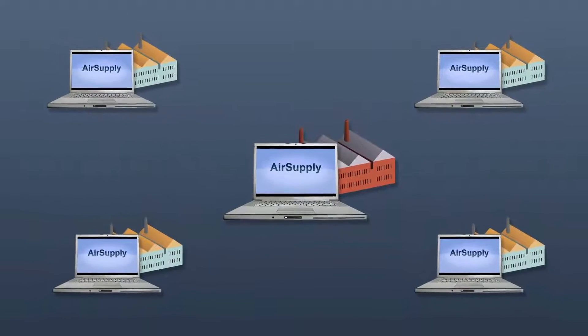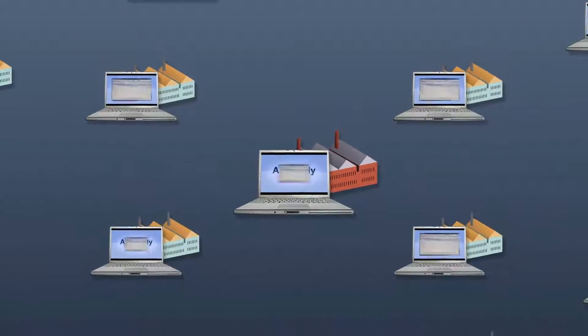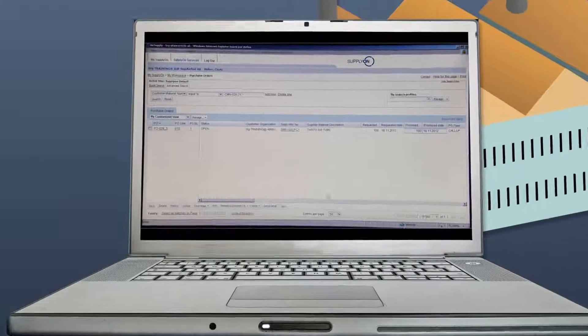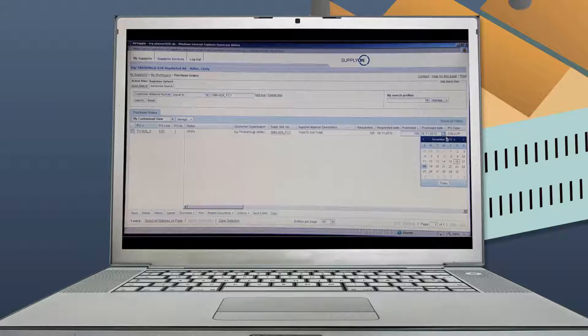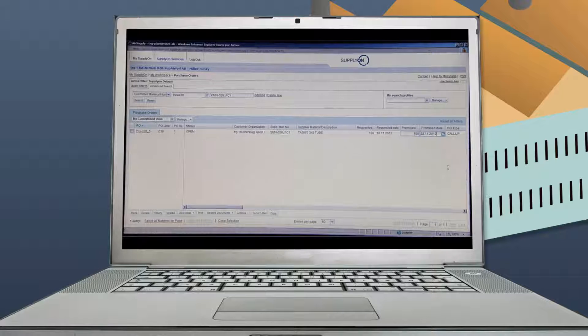As soon as the demand reaches the short-term horizon, the demand is converted into an order and communicated to the supplier in real-time. The supplier can accept or propose a different date or quantity that the customer will accept or reject in turn.